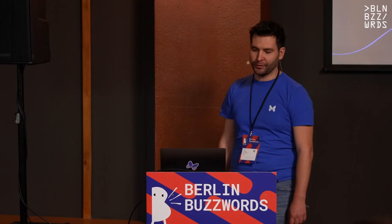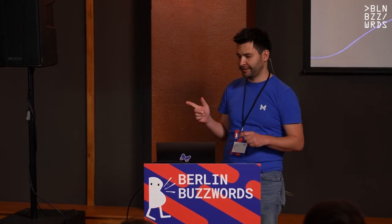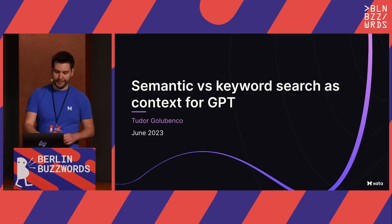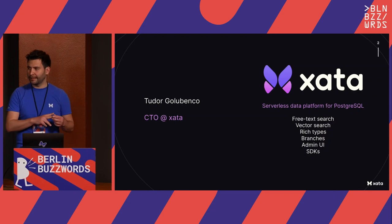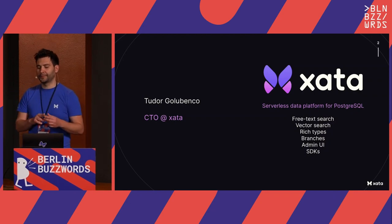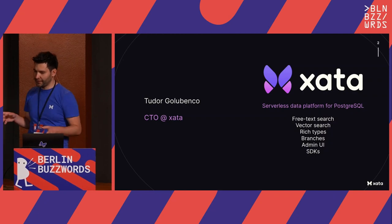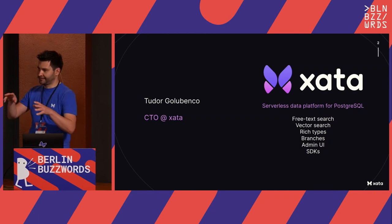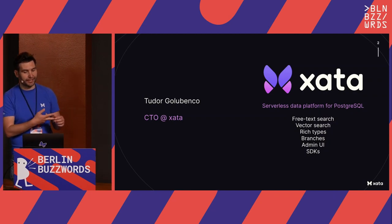Thanks everyone for coming to my talk. I'm going to compare semantic and keyword search for a particular use case as context for GPT. I'm Tudor, CTO at Zeta. We're a pretty small startup. We see ourselves as a serverless data platform around Postgres SQL, which means we offer Postgres as a service, but also a bunch of things on top of it, like free text search, vector search, and rich types.